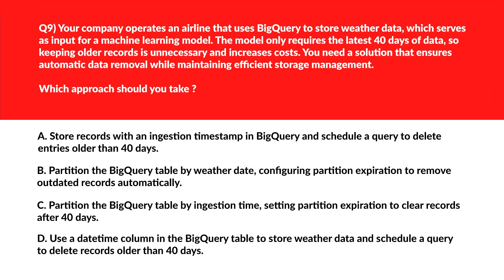Here we go with a question where the model requires the latest 40 days of data. Option A says use a scheduled query. Scheduled queries require manual deletion, increasing maintenance overhead and lacking automated cleanup — incorrect. Option B says partition the BigQuery table by weather date. Partitioning by weather date enables automatic deletion through a set expiration policy, helping reduce storage cost. This looks good because we need efficient storage management as per the question — we'll keep this.